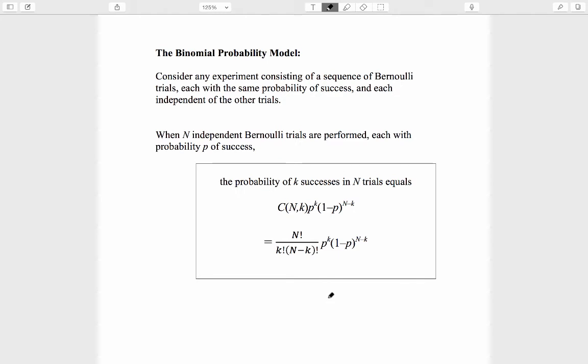The first time we stated the binomial probability model, we expressed it specifically in terms of shooting at a target. Since then, we've seen a number of examples and introduced this terminology of Bernoulli trials. So let's restate the binomial probability model in a more general way. Consider any experiment consisting of a sequence of Bernoulli trials, each with the same probability of success that we're calling p, and each independent of the other trials.